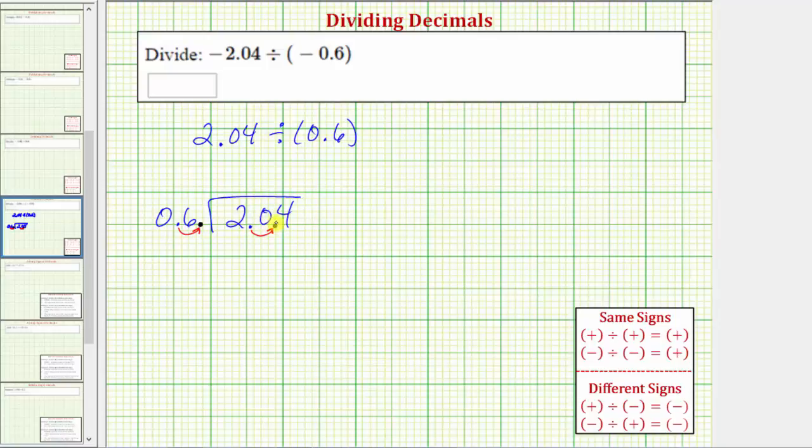Once we do this, we move the decimal point up into the quotient and divide like we normally do. Before we divide though, let's discuss why we can move the decimal points like we did.